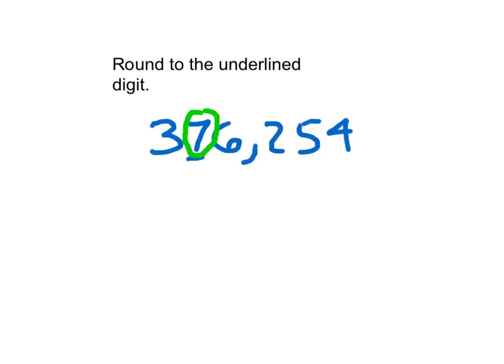That's why we change the underlined there to a circle and then we can underline the 6, because we are looking at the 6 to see whether we keep that 7 the same or whether we add 1. In this case we do add 1 — that 7 becomes an 8. We flex our muscles like a hero, digits to the right change to 0, and all other digits stay the same.